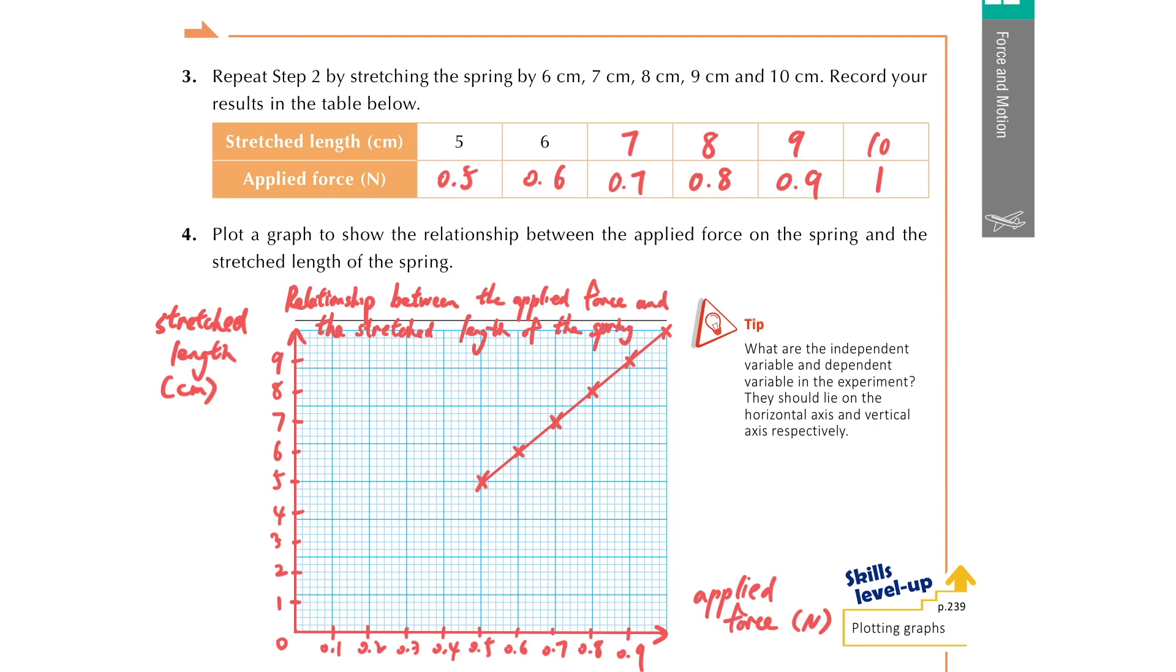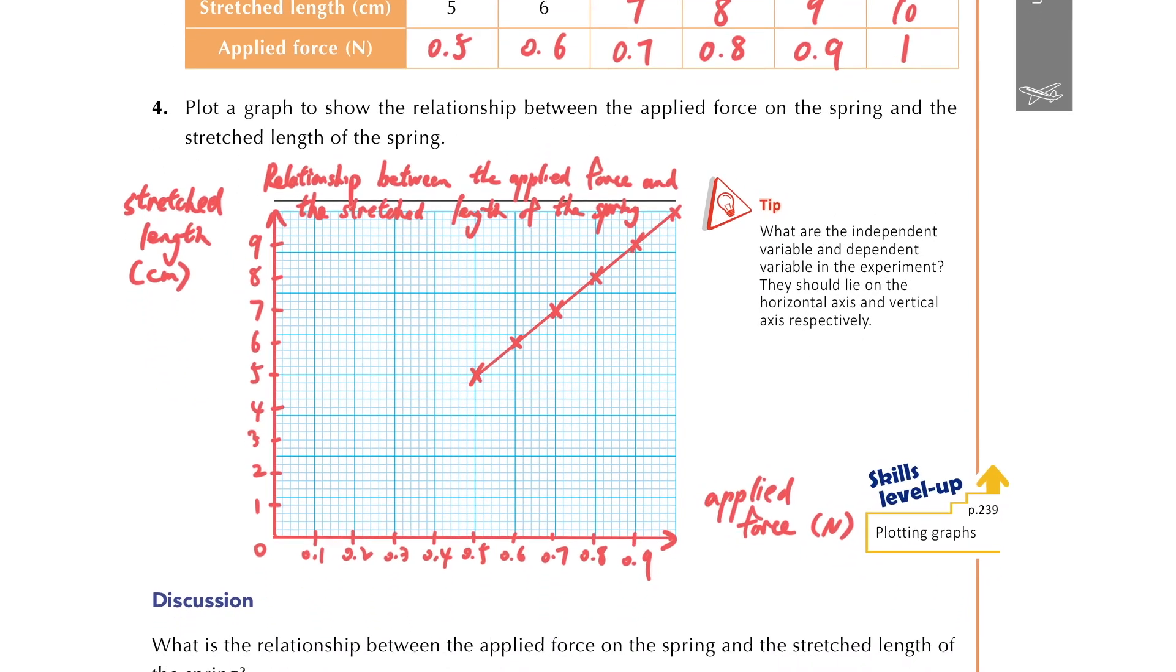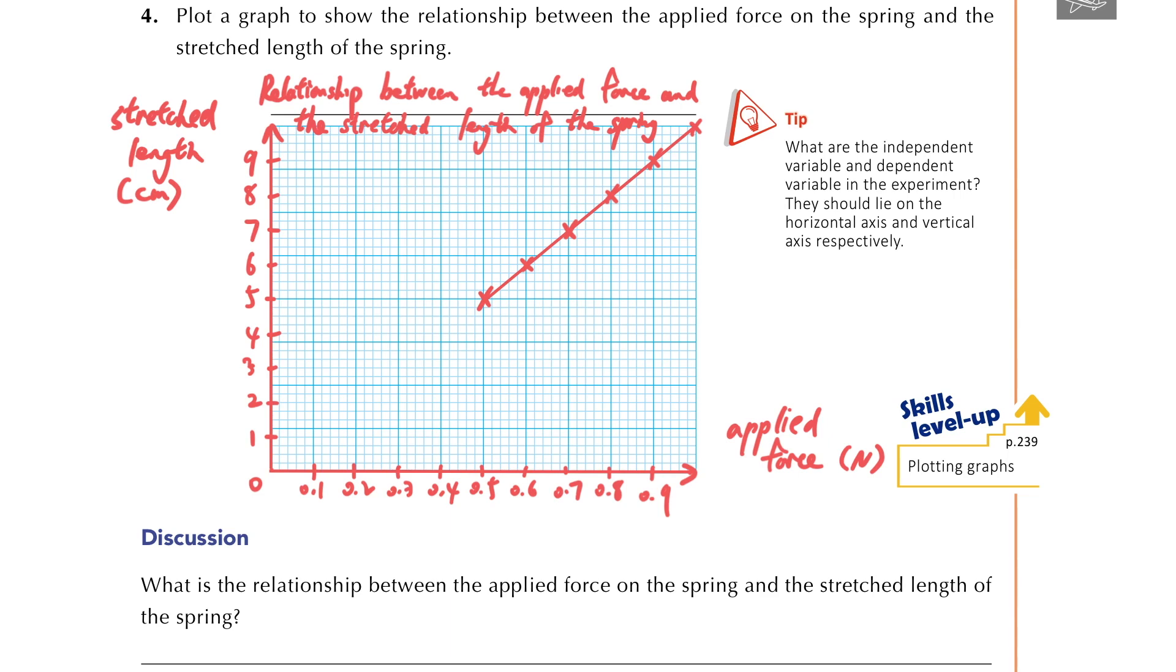If we further study this graph, we can extend the line with the dotted line backward. So when we extend it backward, we can see that it can just reach the zero origin of the graph. When we get a line that is able to pass through the origin of the graph, actually it represents the stretched length of the spring is proportional to the applied force.